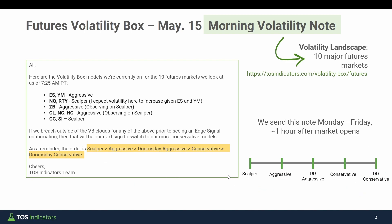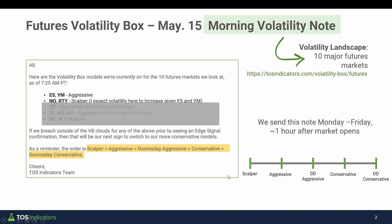Now let's zoom in to our index futures markets. We can see the S&P and the Dow were on their aggressive volatility box models. Meanwhile, the NASDAQ and the Russell were on the scalper, and I even mentioned that I expected this volatility to catch up to the S&P and the Dow as the day progressed. It's not really typical to see the markets separated like this for an extended period of time.